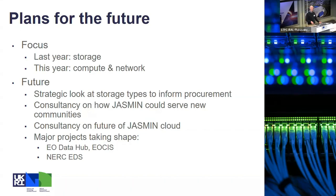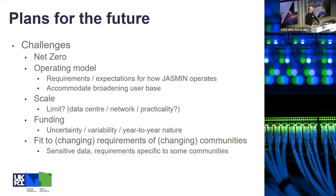We're also looking at how best to provide the right sorts of Jasmine cloud. There are lots of major projects taking shape: the EO Data Hub is a major activity that CEDAR is involved with, and EOSIS — major projects in the Earth observation domain. There's also the NERC Environmental Data Service, of which the CEDAR archive is part, and that is underpinned by Jasmine — all of the CEDAR services run on Jasmine. That's an idea of some of the things we're going to be doing and some of the challenges we're going to face in doing that.